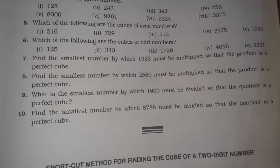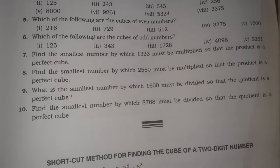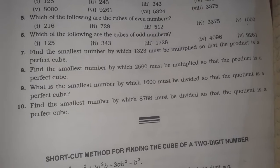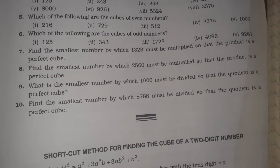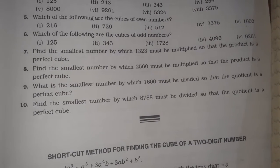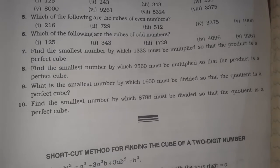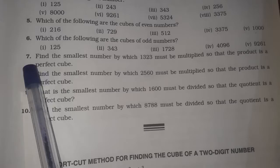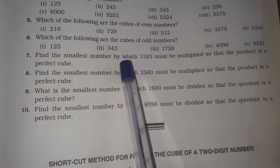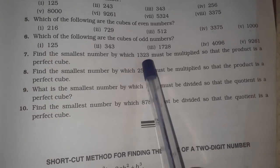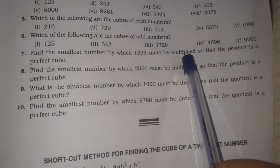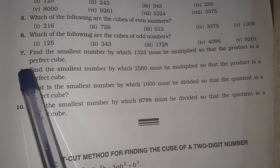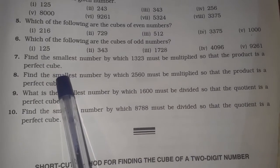Hello dear students, now we are going to solve class 8 mathematics R.A. Sagriwa chapter number 4, cube and cube roots, exercise 4A question number 7. The question is: find the smallest number by which 1323 must be multiplied so that the product is a perfect cube.